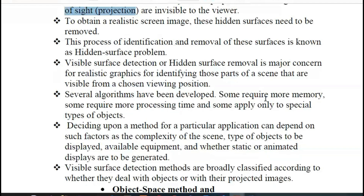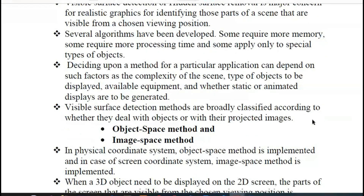The visual surface detection method is divided into two different categories: what kind of thing is the particular image — a visible pixel or visible surface on the display unit. So, what kind of thing is the object space method or image space method?